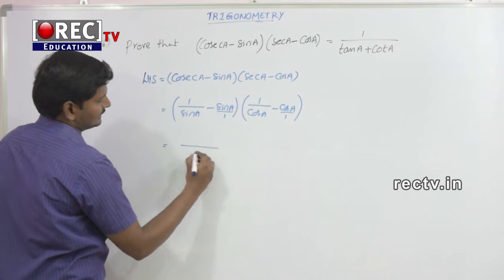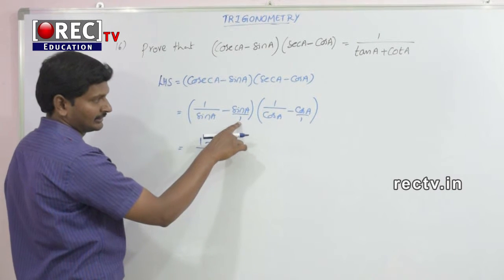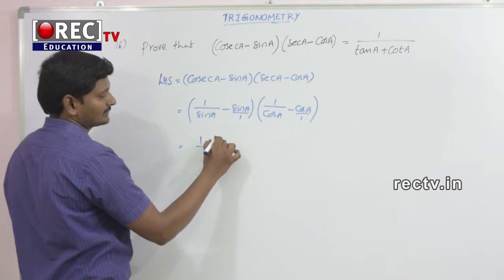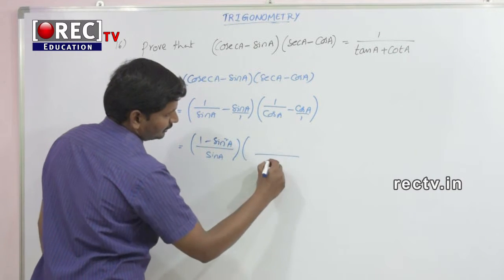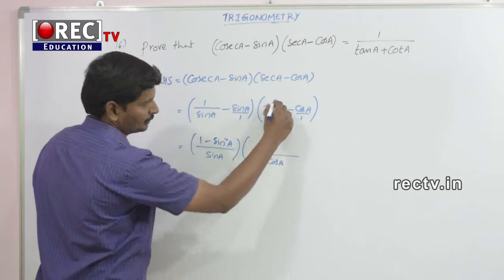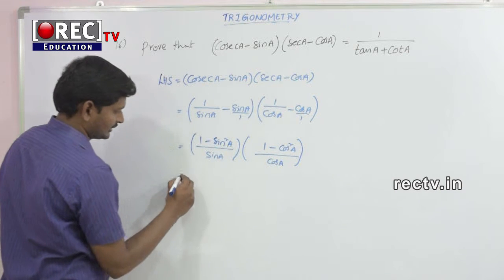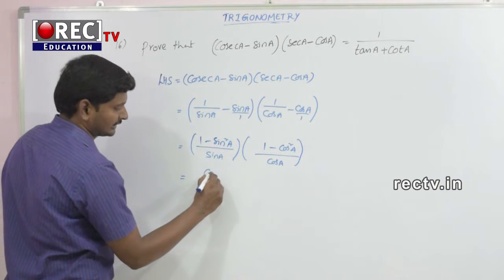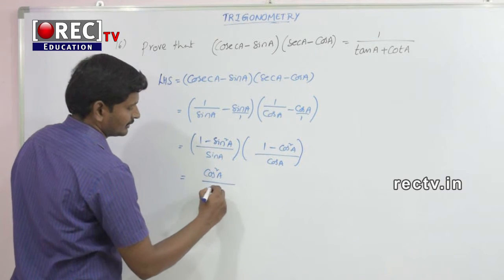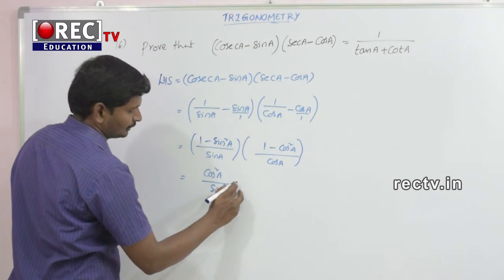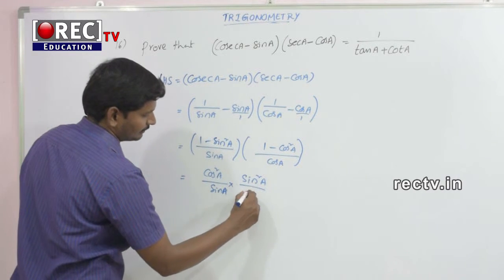Take the LCM for these two terms. The LCM is sin(a), and in the numerator we get 1 minus sin(a) into sin(a), that is 1 minus sin²(a). Similarly for the second bracket, the LCM is cos(a), giving 1 minus cos(a) into cos(a), that is 1 minus cos²(a). Now, 1 minus sin²(a) is nothing but cos²(a) from the first trigonometric identity, divided by sin(a). And 1 minus cos²(a) is nothing but sin²(a), divided by cos(a).